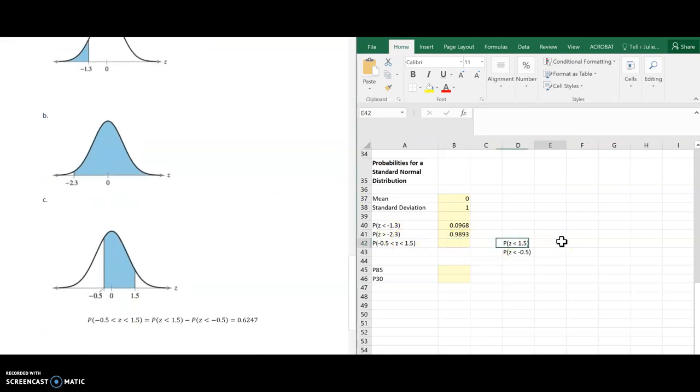Now if they're between, same as before, I'll do each one separately. So 1.5. And then do negative 0.5. And then come over here and subtract those two values. So the larger one minus the smaller one. They'll give you my answer.